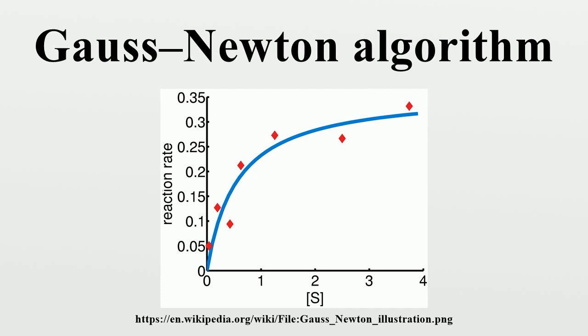Related algorithms: In a quasi-Newton method, such as that due to Davidon and Fletcher and Powell or Broyden, Fletcher-Goldfarb-Shanno, an estimate of the full Hessian